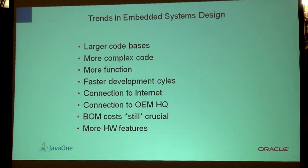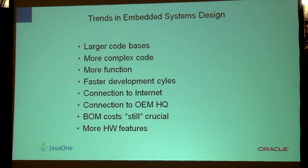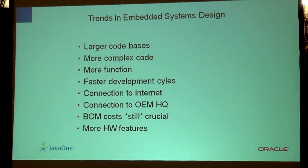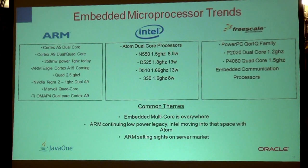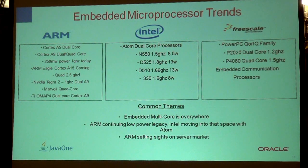Almost nobody writes anything but more and more complex code. Code has a tendency to grow, get complex, and grow bugs — it has to have more functions. We also want faster development cycles; we want to get the newest toy out tomorrow, not wait six months. Things have to be connected to the internet. We also want to keep the BOM — the bill of materials — cost low so more people can buy them. CPUs, especially from embedded chip companies, are getting stronger, with support for more memory, faster speeds, and larger bit widths. They need better and better programming tools.